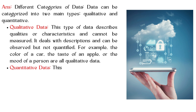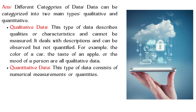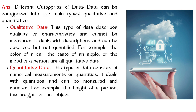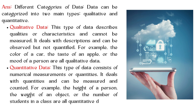For example, the color of a car, the taste of an apple, or the mood of a person are all qualitative data. Quantitative data consists of numerical measurements or quantities. It deals with quantities and can be measured and counted.